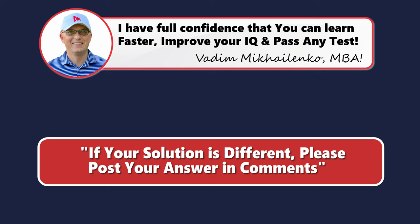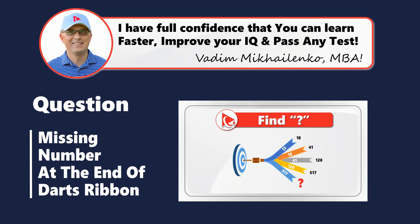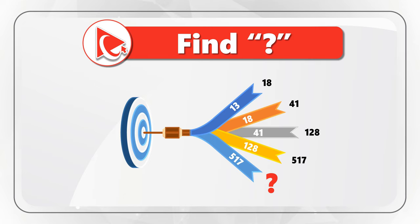You will enjoy this question because it tests your logical thinking and analytical skills. You are presented with a dart in the exact middle of a dartboard. The dart has numbers on top of the ribbon and at the end of the ribbon. The numbers on the ribbon are 13, 18, 41, 128, and 517. Numbers at the end of the ribbon are 18, 41, 128, and 517.